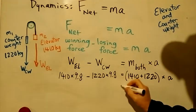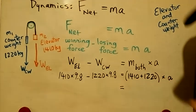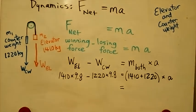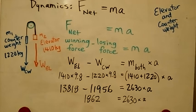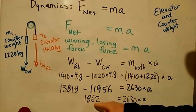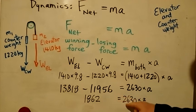So we'll do the math. And working through a little bit of math, we get to there. And a little bit more math, we're left with 1862 newtons on the side is equal to 2630 kilograms times a.